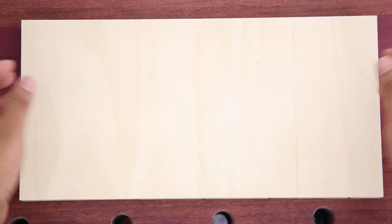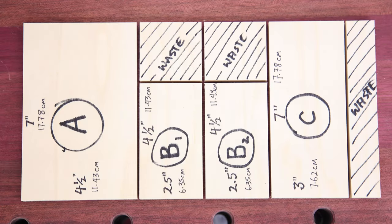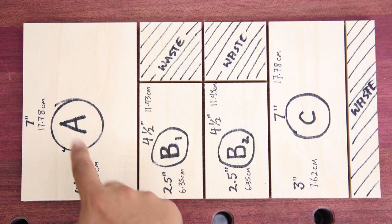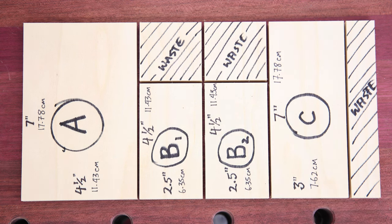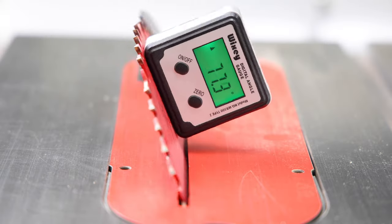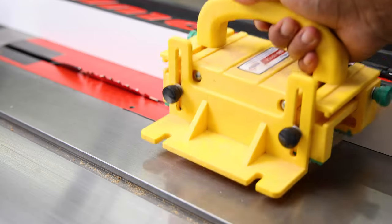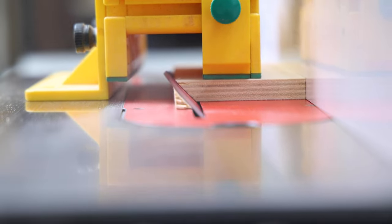For the plywood, you're going to want to make cuts like this to create four pieces: A, B, B, and C. The rest are going to be waste. The two B pieces are going to get a 45-degree bevel on one edge, and the C piece is going to get 45-degree bevel on both edges.